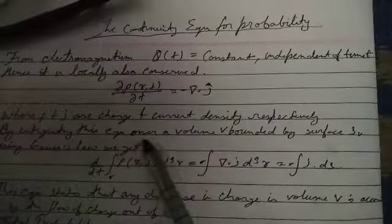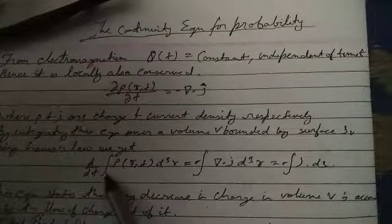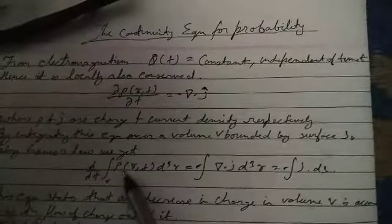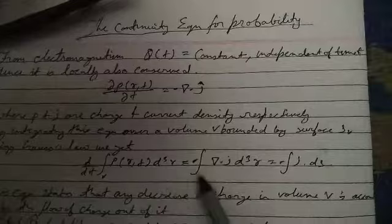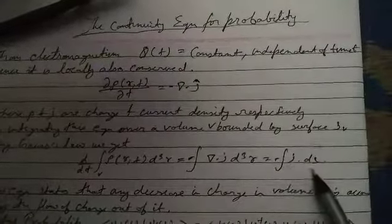By integrating the equation over a volume V bounded by surface S_V using Gauss law, we get dρ/dt integral of ρ(r,t)d³r is equal to minus integration of j dot ds.